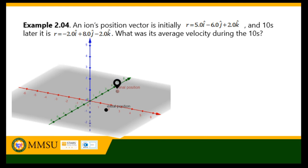For the next example, an ion's position vector is initially at r equals 5i-hat minus 6j-hat plus 2k-hat, and 10 seconds later it is at position r equals negative 2i-hat plus 8j-hat minus 2k-hat. What was its average velocity during the 10 seconds? The ion is placed in a three-dimensional Cartesian plane.